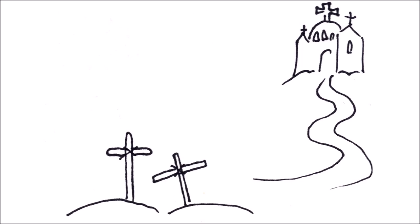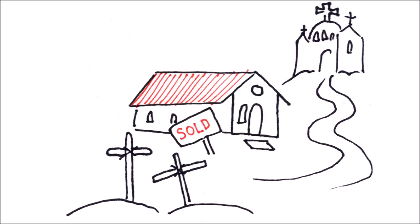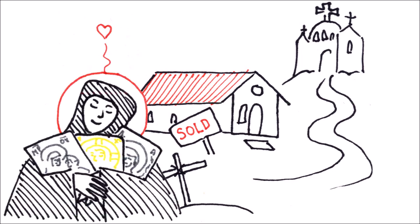Saint Theodosia became a nun after she distributed to the poor what remained of her parental inheritance. She used part of the money to commission gold and silver icons of the Savior, the Theotokos, and Saint Anastasia.